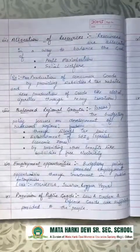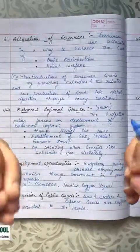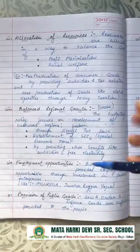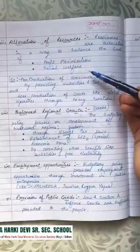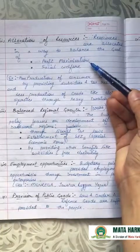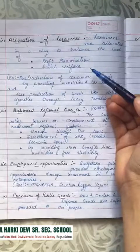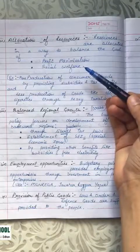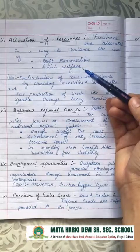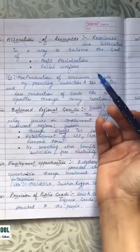The next objective is allocation of resources — distributing resources in a way that creates a balance between profit maximization and social welfare. Producers and investors earn profit on their investment, but simultaneously the social welfare of the country should also be maintained.